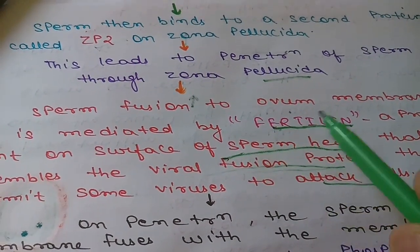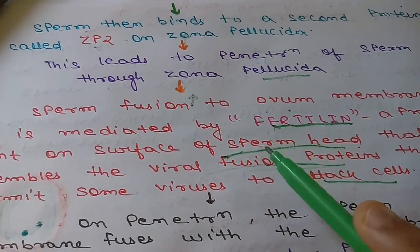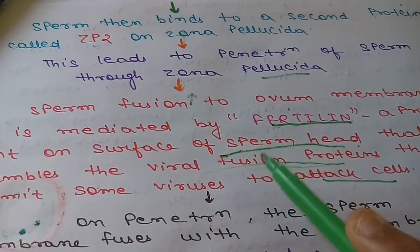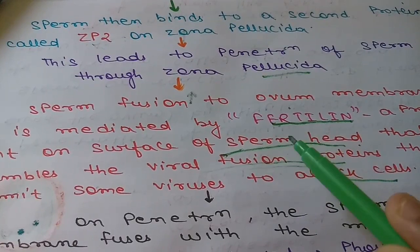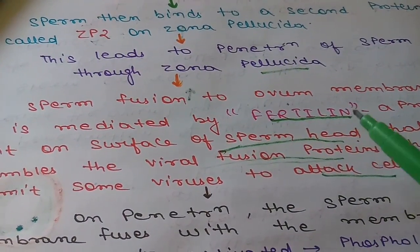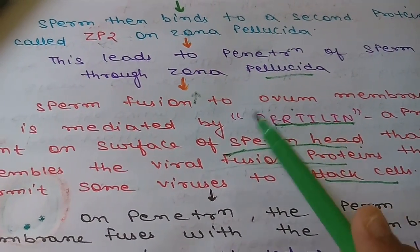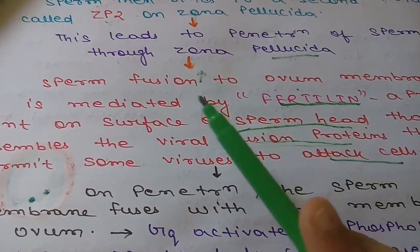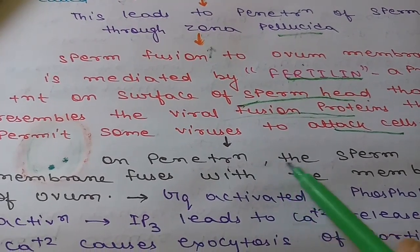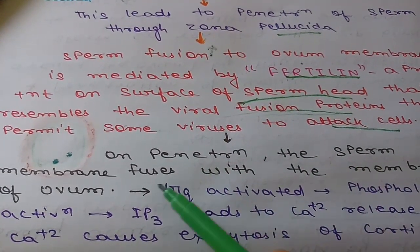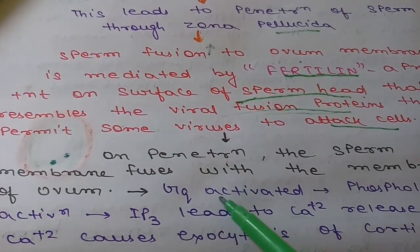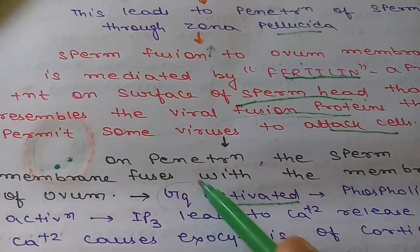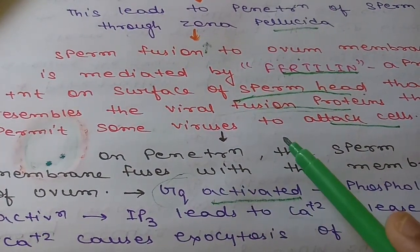Fertilin resembles the proteins present on viruses that help viruses to fuse with different cells, as seen in HIV. So fertilin mediates the fusion of the ovum membrane with the membrane of the sperm. On this penetration, the sperm membrane fuses with the membrane of the ovum, and after this fusion, G-protein coupled receptors get activated — particularly GQ, a type of G-protein coupled receptor.